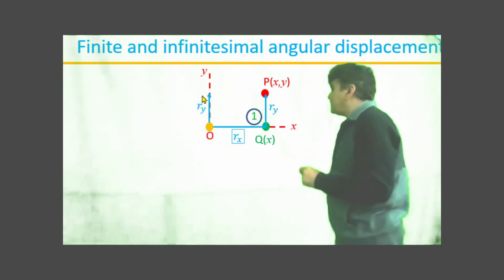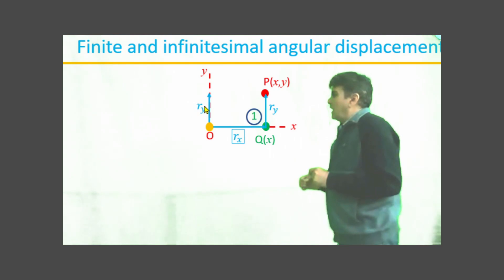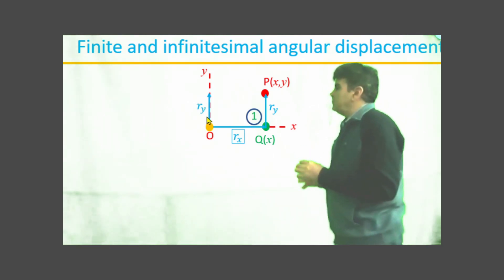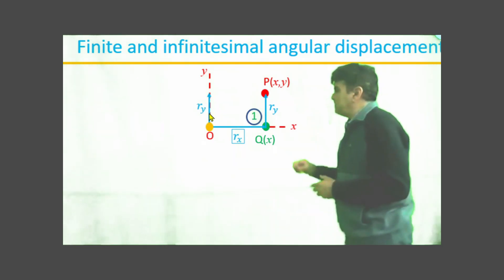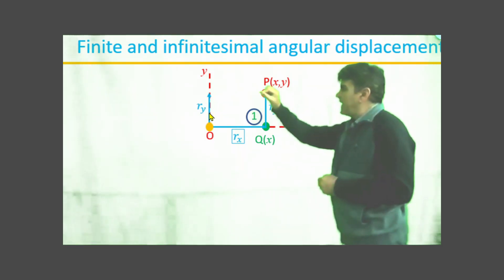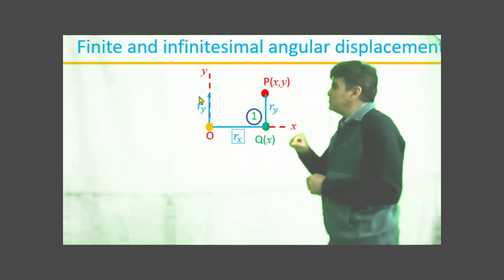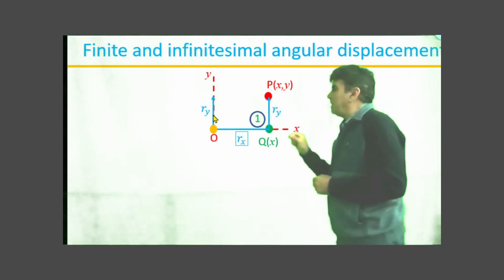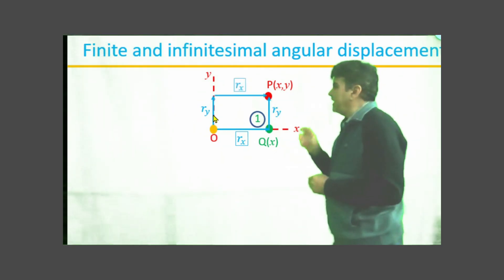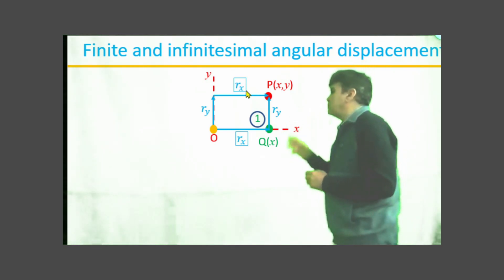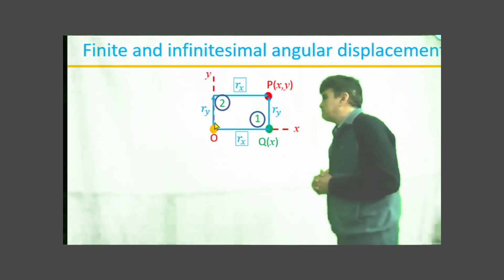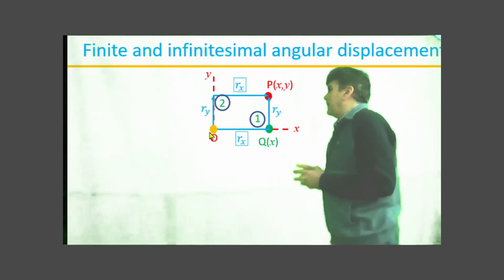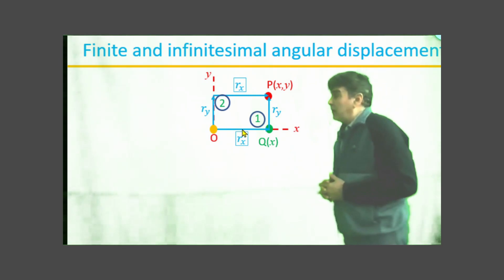Alternatively, I first move along the y-axis with a finite displacement R_y and then turn toward point P and move a finite displacement R_x to reach point P. I call this path 2.